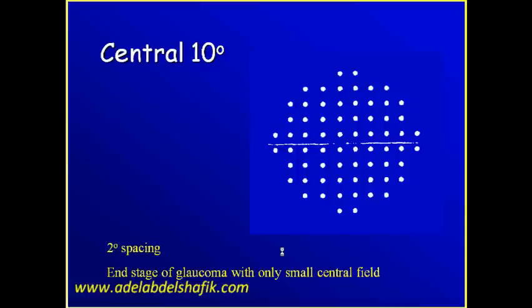Another test is the central 10 degrees. In this case, the difference between one location and the next location is only two degrees. The space between one test location and the next is two, whereas in the 24 and in the 30 it was six degrees.